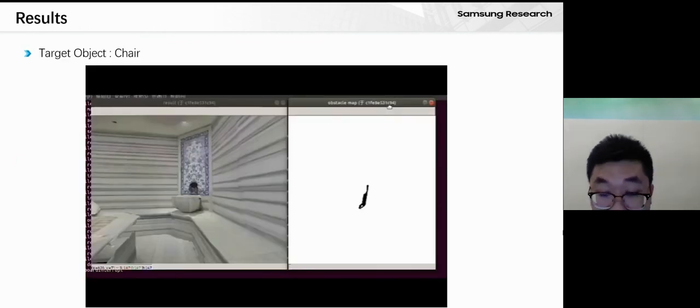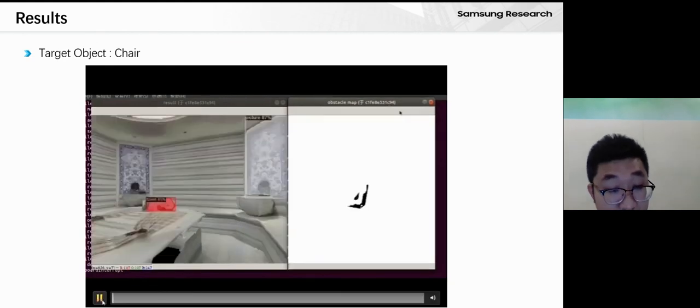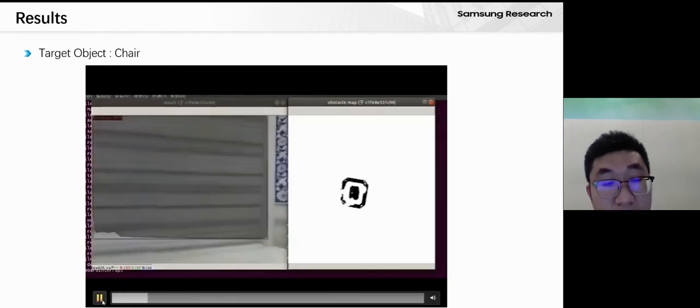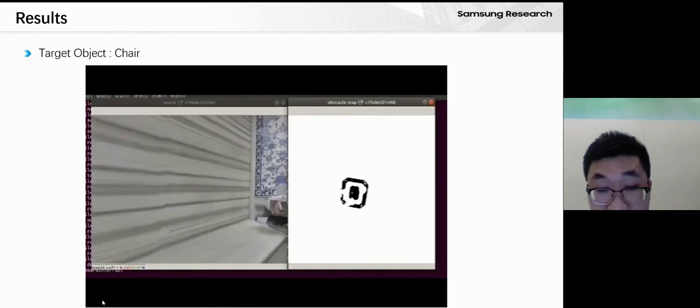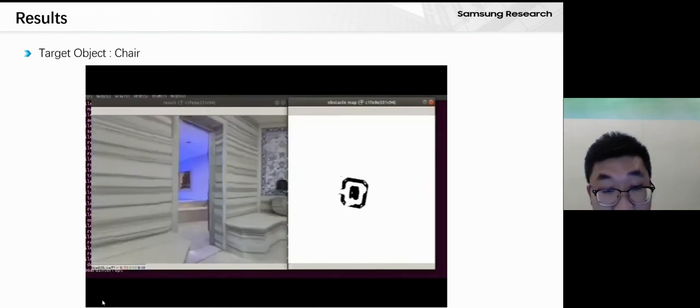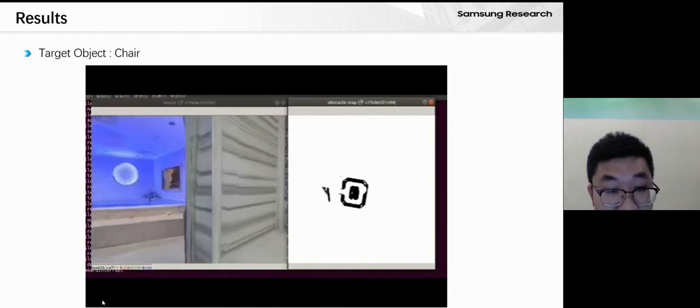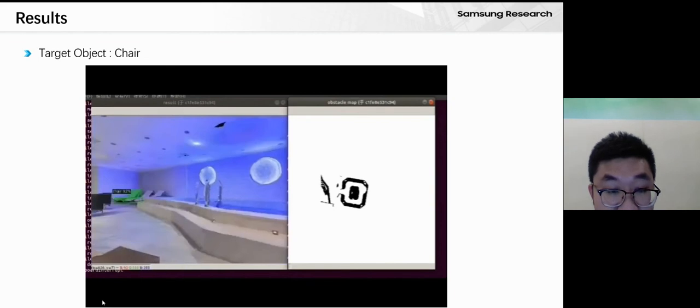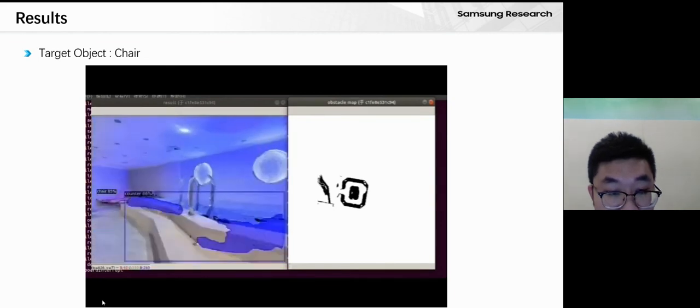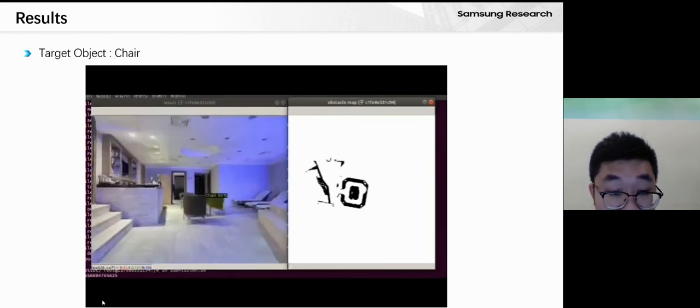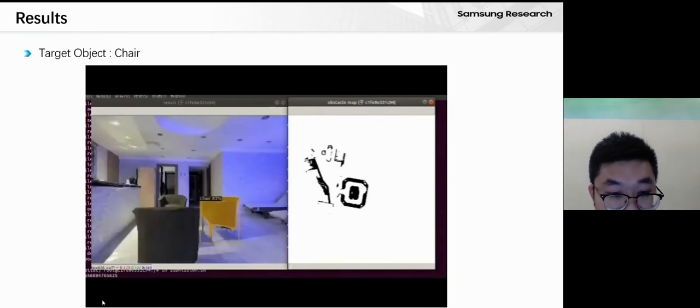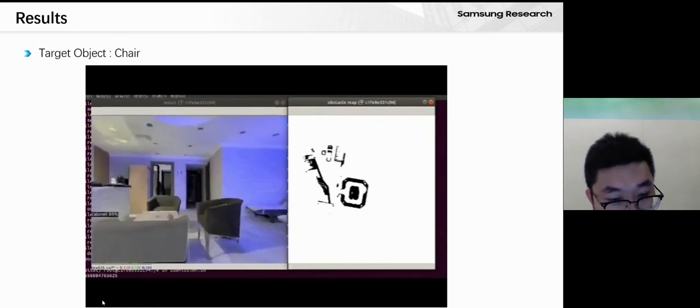Next is our running case where our agent finds a chair. As we can see, our agent walks through a very complex region, recognizes the chair, goes to the chair, calls stop, and we win.